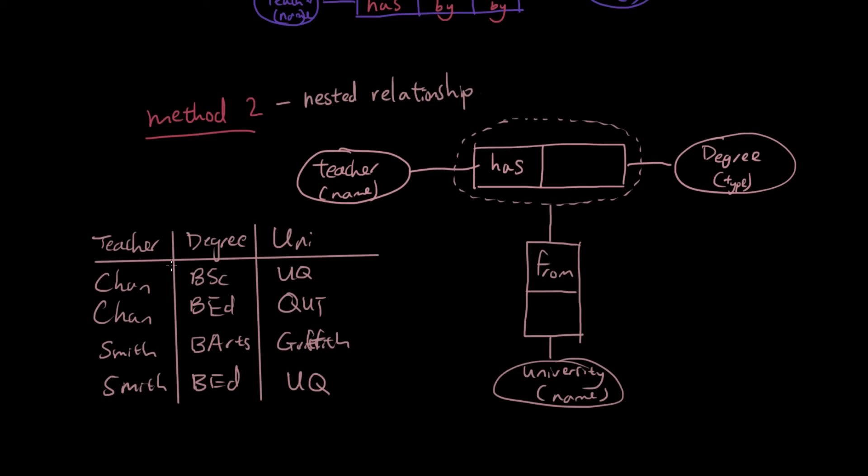The first two columns are good enough for identifying each row, because if you have a look, there's no other row with Chan and BSc. There's no other row with Smith Bachelor of Arts. So both columns, teacher and degree, are required to identify each row. And that's probably what's going to happen in a ternary relationship.